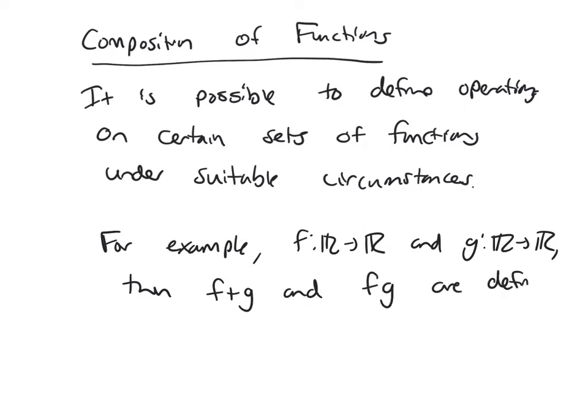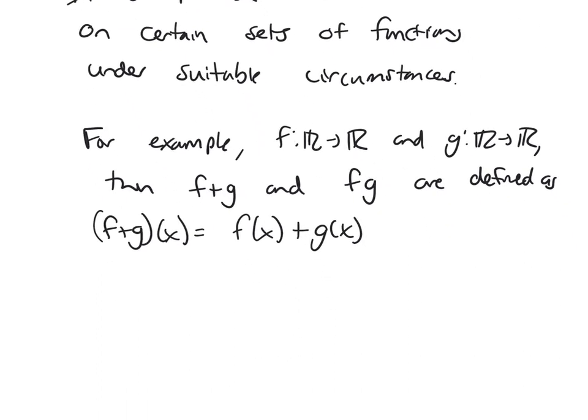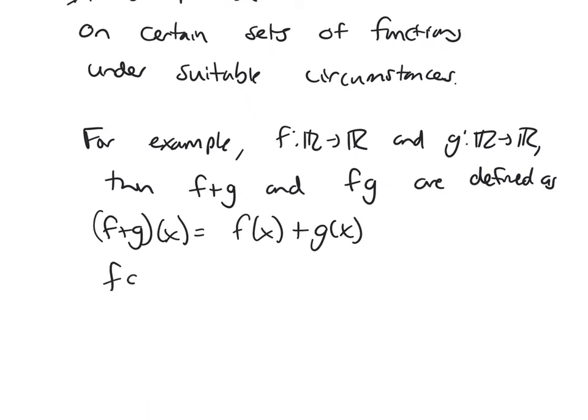are defined as F plus G. If you input something into the sum, it's going to output F of X plus G of X. And then if I input something into the product and put in an X, it's going to spit out F of X times G of X.